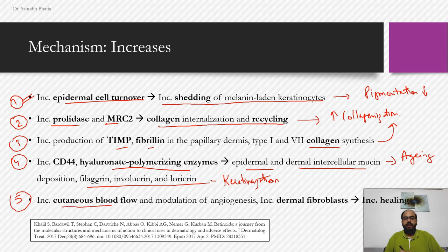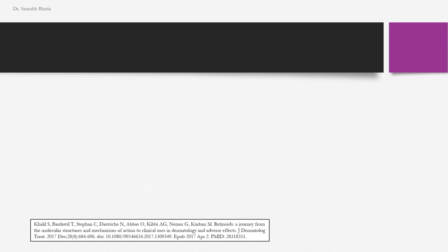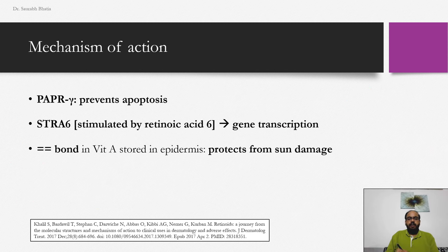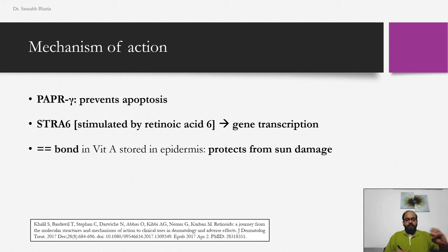At very low doses for a longer time, retinoids make the skin appear healthier and slow down the aging process. Fifth, retinoids increase cutaneous blood flow, modulate angiogenesis, and increase dermal fibroblasts — all processes that improve aging. There is no true anti-aging mechanism, but slowing of aging can occur with retinoids.